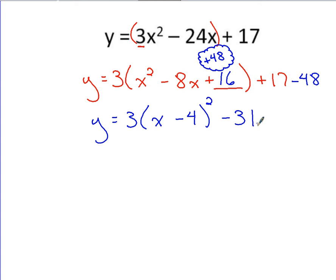You've got your vertex form. Now you can find your vertex. The vertex is going to be, you've got to take the opposite of this, so 4. You've got to take the same as this, negative 31.